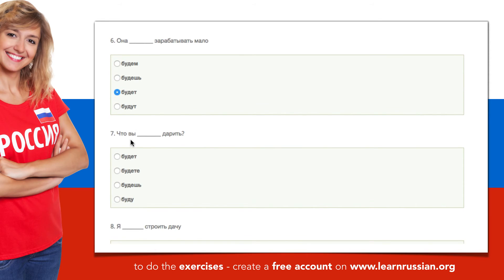The next one. Что — what. Вы — you. Дарить — to give. The options are: будет, будете, будешь, буду. Что вы будете дарить? What will you give as a present?